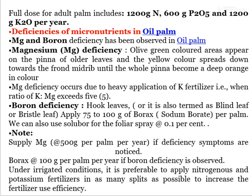Full dose for the adult palm: 1200 g nitrogen, 600 g phosphorus, and 1200 g potassium per year. The most common micronutrient deficiencies in oil palm are magnesium and boron. Magnesium deficiency causes olive-green coloring on the leaves of the pinnae; yellow color spreads down towards the frond midrib until the whole pinnae becomes a deep orange color. Magnesium deficiency occurs due to heavy application of potassium fertilizer when the K:Mg ratio exceeds 5.